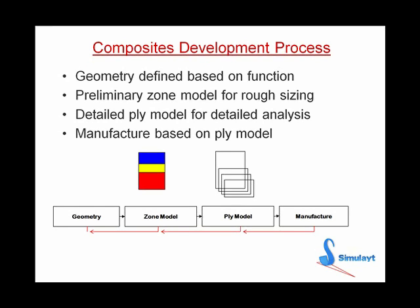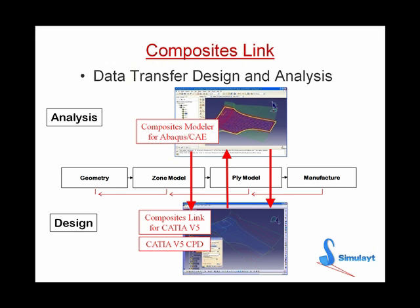Composite's Link supports the development of composite parts both in terms of initial zonal definition and also ply definitions which are necessary for manufacturing the part. Composite's Link for the CATIA V5 composites design environment allows designers and analysts to communicate effectively during the composites development process. This saves time, improves product quality, and prevents costly errors.